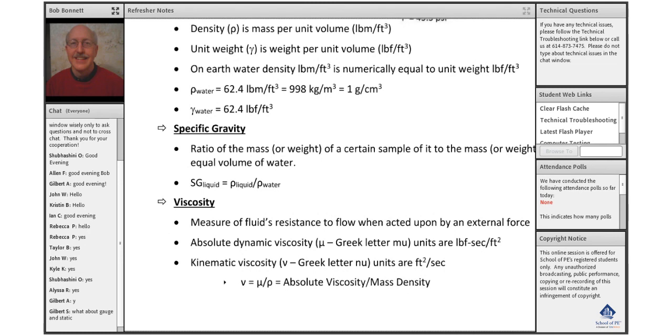Last comment here on this particular fluid properties page: viscosity is a measure of the fluid's resistance to flow when acted upon by an external force. Two types of viscosity are both listed out in the properties of water table, which is around page 3 here of the refresher notes. It is the absolute dynamic viscosity and the kinematic viscosity.